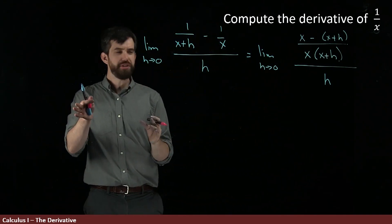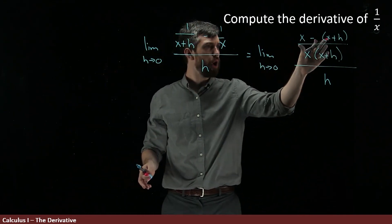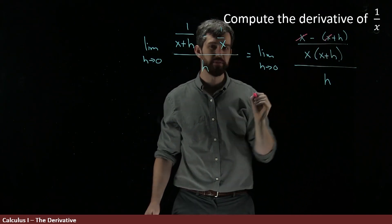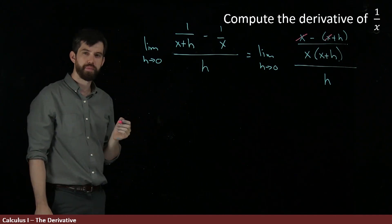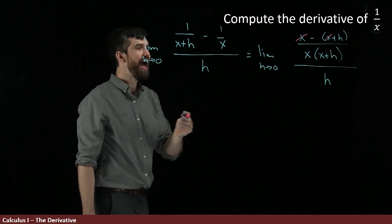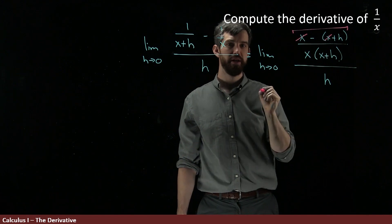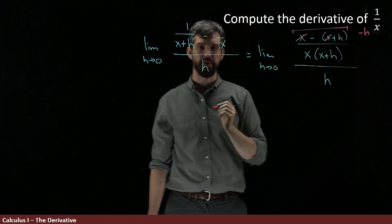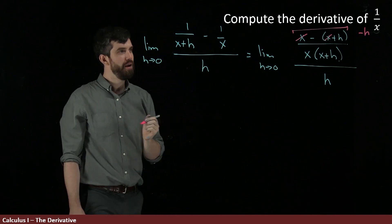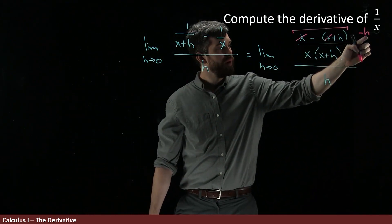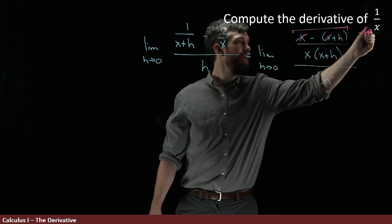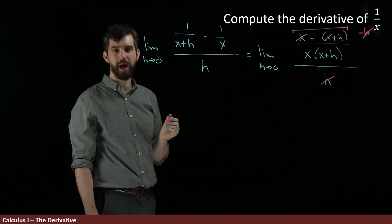Now, I want you to notice that up here at the top, I've got an x, and then I subtract off an x. So let's get rid of those. I don't need those any longer. And so what I have on this top, this whole top portion here, this is just the same thing as the value minus h up there on the top. But then I have an h on the top, and I have an h down here on the bottom, and so that h and that h are going to cancel as well.